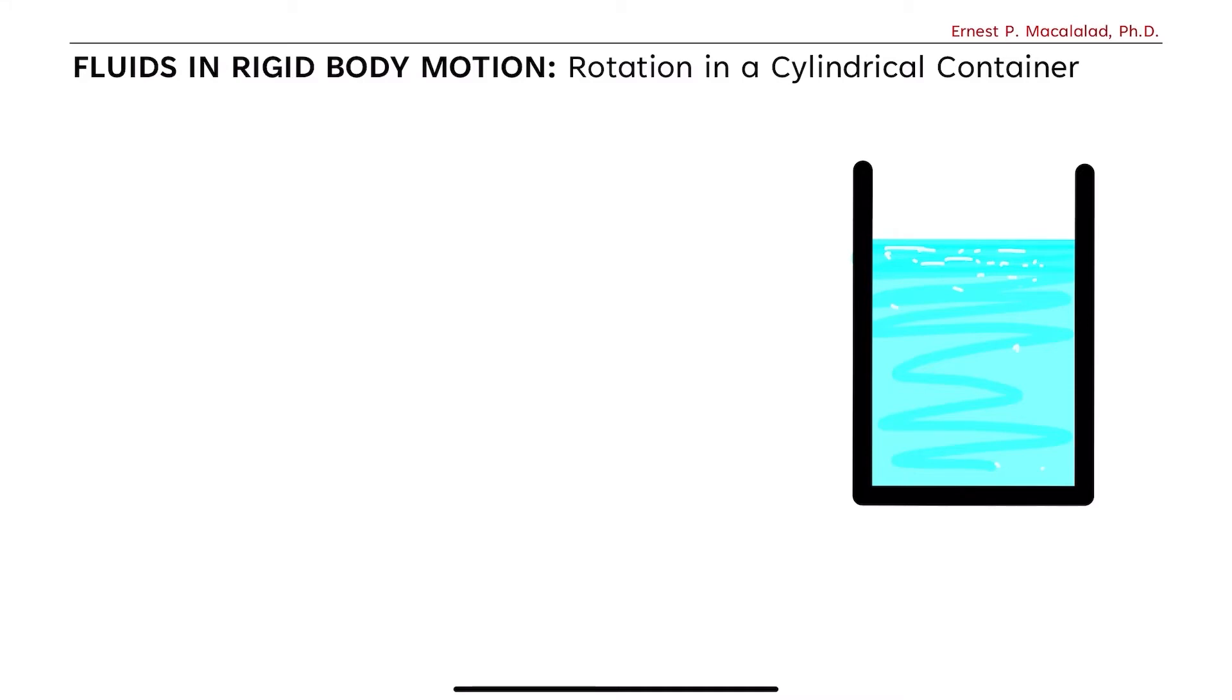What's up guys, it's me Sir Ernest and today we're going to discuss fluids that is rotating in a cylindrical container. Consider a vertical cylindrical container that is partially filled with an incompressible fluid, so that means the density is constant and the radius is r. The cylindrical container is rotated about this axis with a constant angular velocity given by omega equals omega k hat.